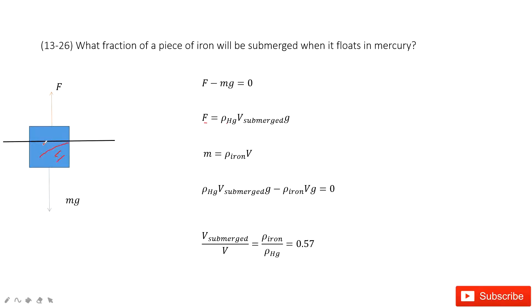It is the volume replaced, the volume of mercury displaced by this iron object. So this is V_submerged times g. This gives us the buoyant force.